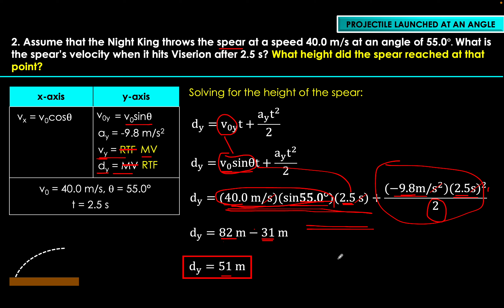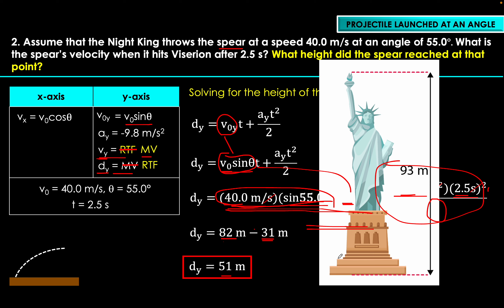51 meters is quite high — it's a little more than half the height of the Statue of Liberty including its pedestal. But the Night King and all White Walkers in Game of Thrones are not human; they have incredible strength, so this height is not surprising given the high launch velocity. Practice makes you more proficient at solving physics problems. That's it for this video — thank you so much and have a great day.